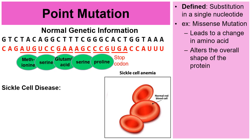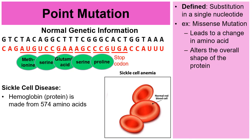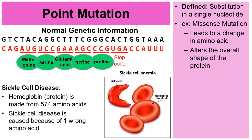A great example of this is sickle cell disease. Hemoglobin is a protein made from 574 amino acids, and in sickle cell disease, 573 amino acids are perfect but one amino acid has been substituted in a missense mutation. This alters the shape of the hemoglobin protein, which alters the shape of red blood cells — a life-threatening disorder caused by one wrong amino acid.